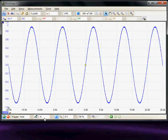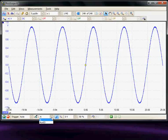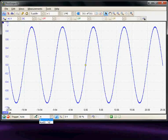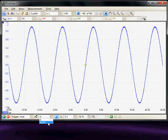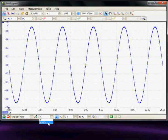The next icon is the source. At the moment we're triggering on channel A, and a second choice would be the auxiliary IO for an external trigger. If channels B, C, or D were turned on, these could be selected as the trigger source.